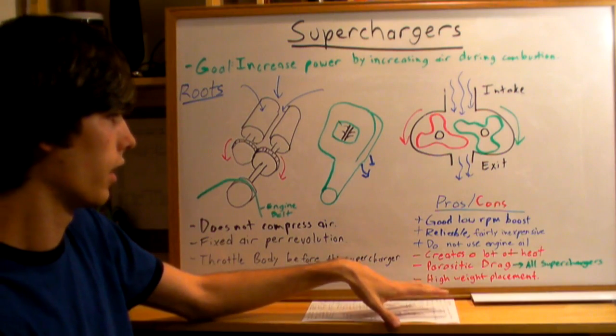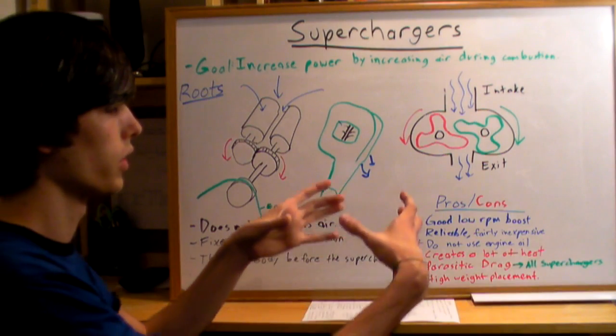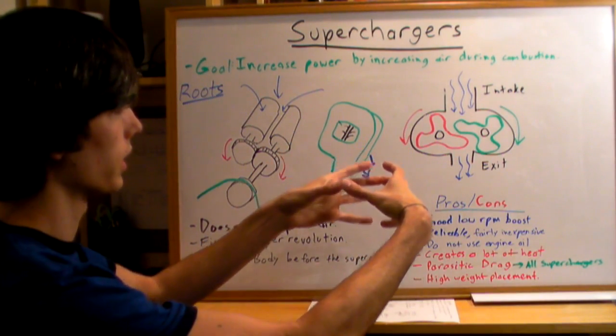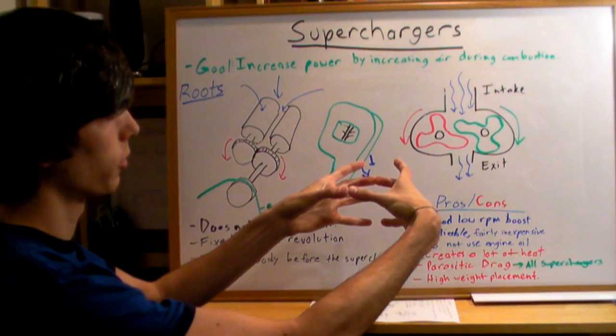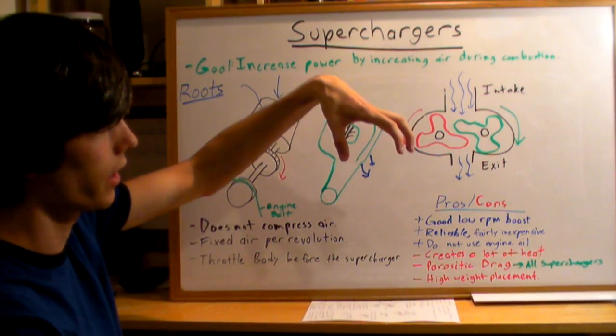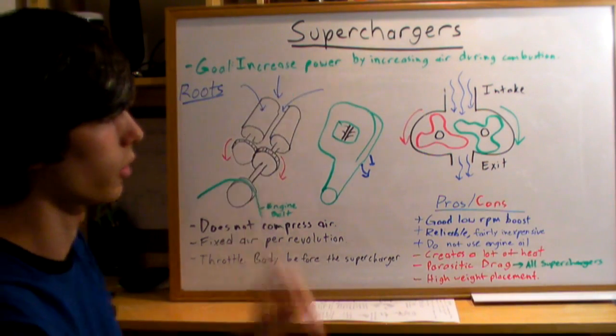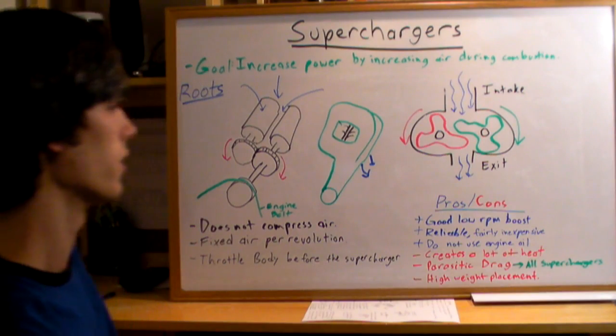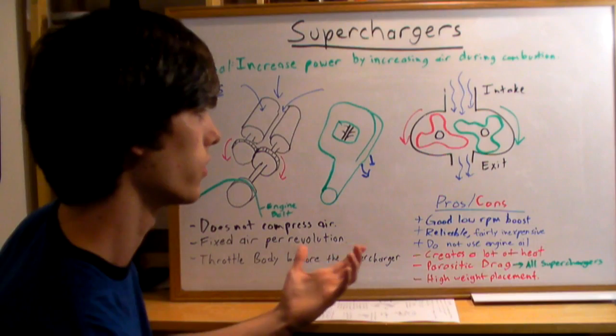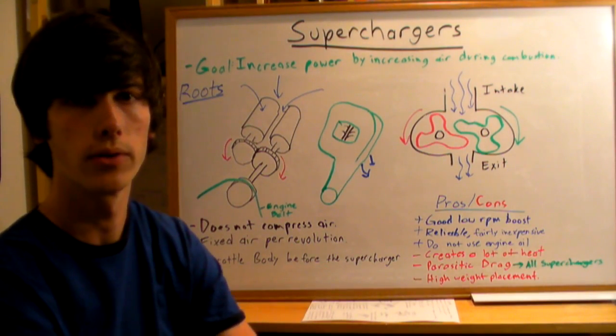Another negative effect that I'd like to mention is that you have high weight placement. You've got your engine and then the supercharger is going to be placed on top typically if it's a roots type supercharger. You've got a mass that's high up on your engine, so that's going to be bringing the center of gravity up a little bit, and that's just not ideal, whereas with turbochargers you can mount them much lower or a centrifugal supercharger you can also mount those lower.